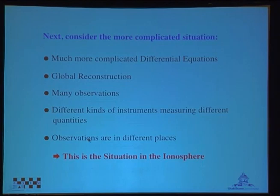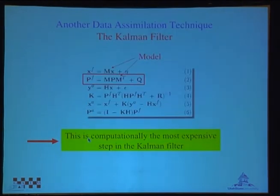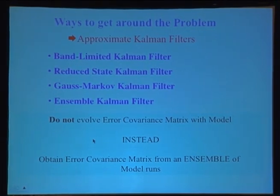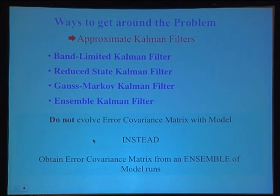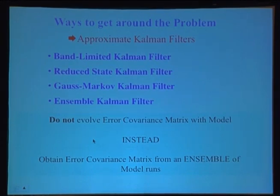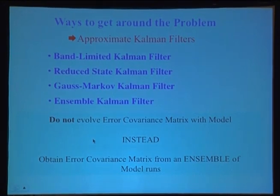Unfortunately, propagating the error covariance matrix is so computationally time-consuming that one has to find solutions with limitations. A whole zoo of approximations to the Kalman filter have been developed: the band-limited Kalman filter, reduced-state Kalman filter, Gauss-Markov Kalman filter, and Ensemble Kalman filters — all to get around the immense computational effort. All of these are employed in ionospheric models currently in use: the band-limited Kalman filter is used by JPL, we have built an operational Gauss-Markov Kalman filter, and we are now building Ensemble Kalman filters.